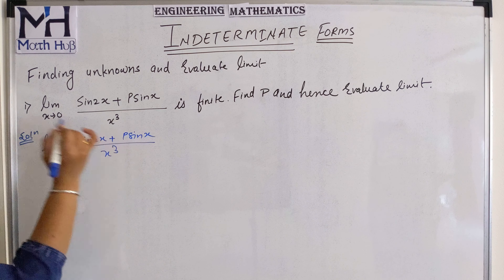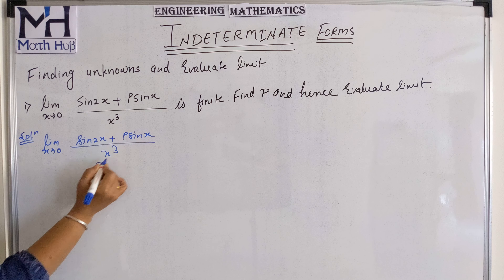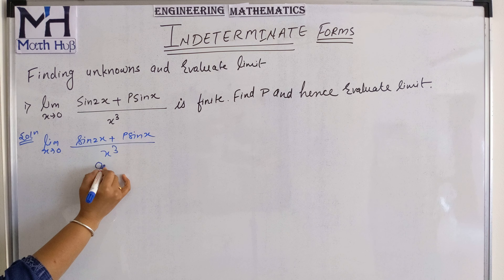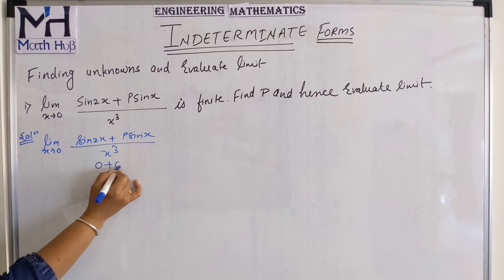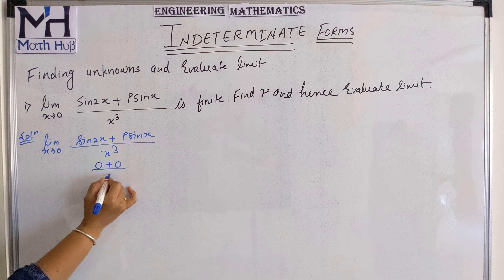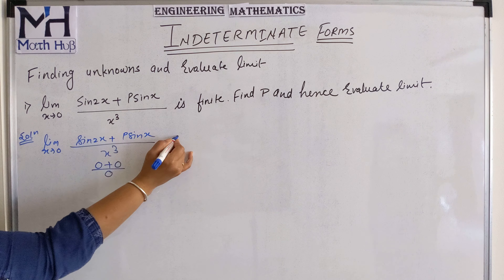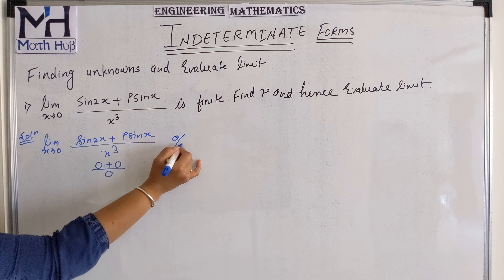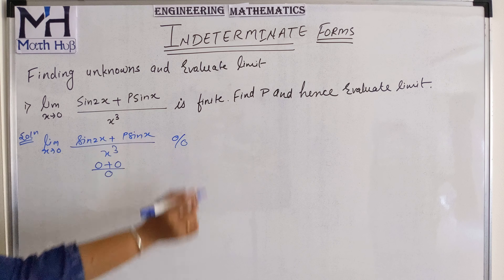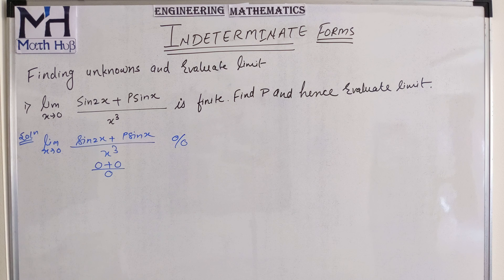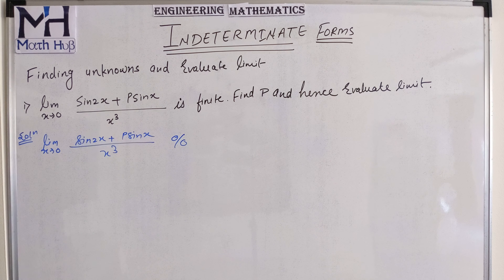When I substitute x tends to 0, I have sin(0) = 0, p·sin(0) = 0, and the denominator is also 0. So here I have indeterminate form 0 by 0.